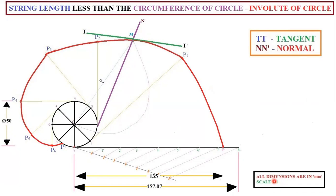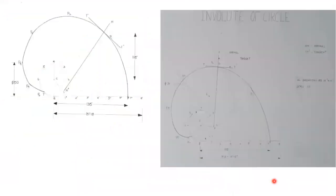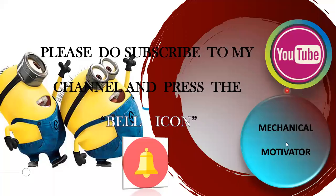If you have any doubts, type in the comment section. After completion your diagram will look like this — only your curve, tangent, and normal should be drawn with HB pencil and should be very dark. Note: the dimensioning shown at the end is incorrect, no need to dimension that. Do subscribe to Mechanical Motivator and press the bell icon so you get all uploaded videos. Thanks for watching. Have a great day.